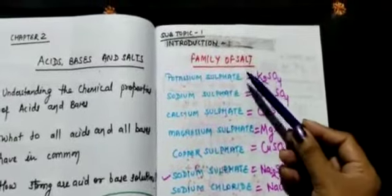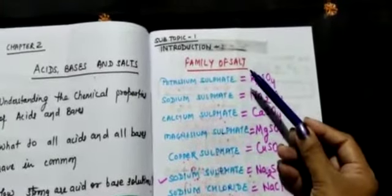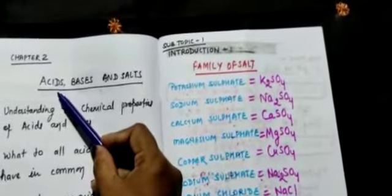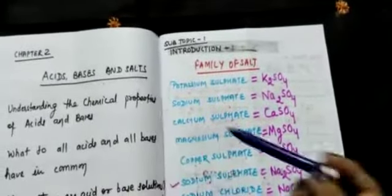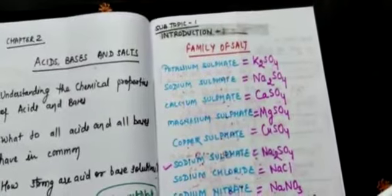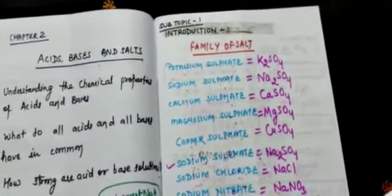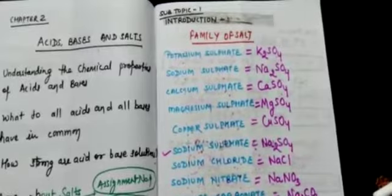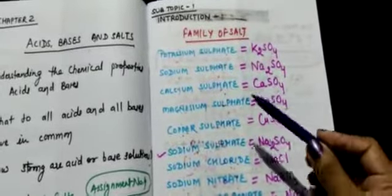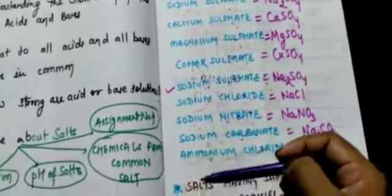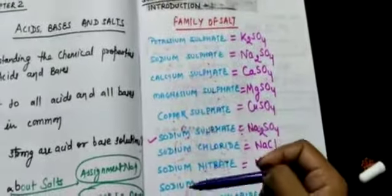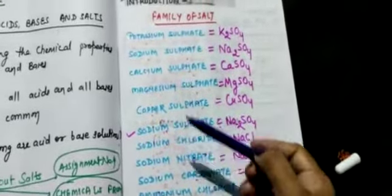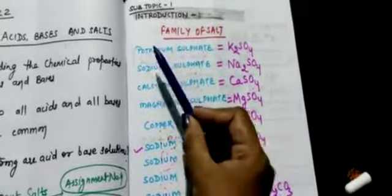In the introduction, we have a family of salts. We have already completed information about acids, then bases, and today is the turn of salts. First is about pH of salt, then the different chemical compounds related with salt. So here, families of salt — there are so many examples written here about salts. All these blue color chemical compounds are salts.